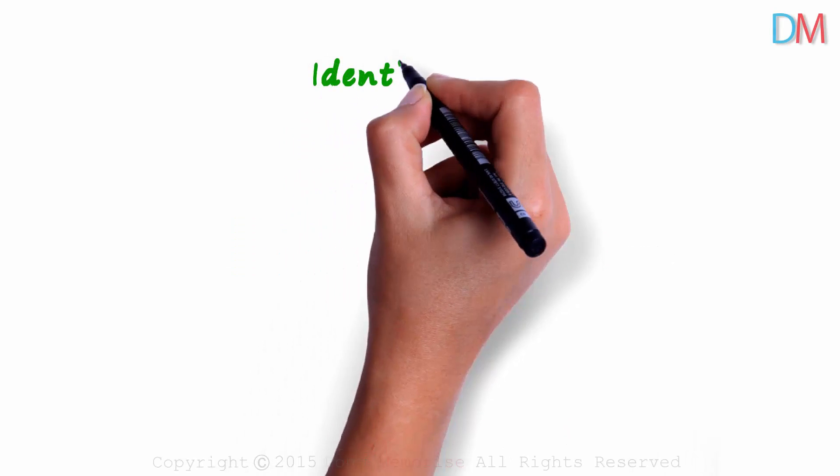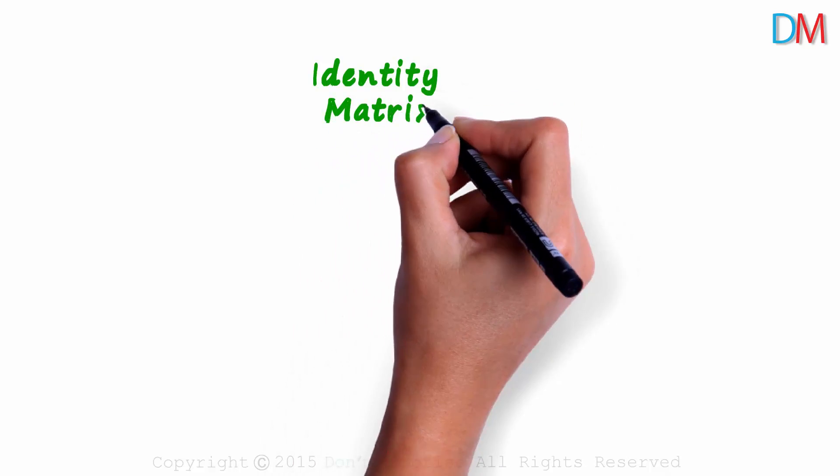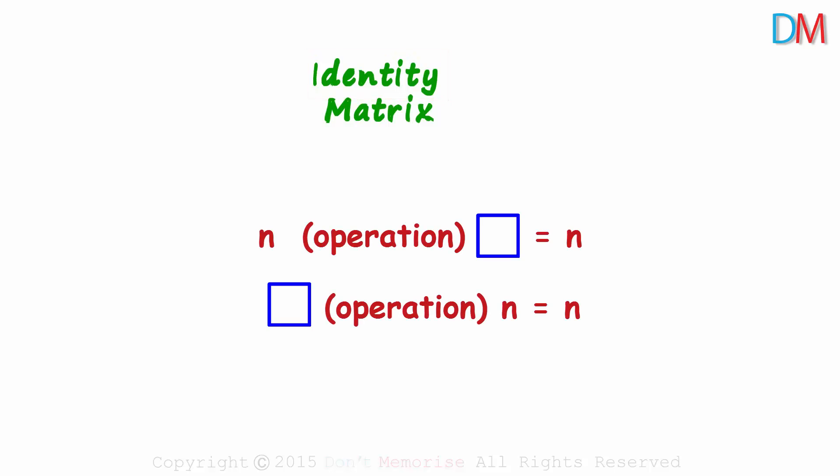An identity matrix is one of the most important matrices we will look at in the topic of matrices. What does identity mean? In mathematics, it means getting the same answer as the original number.